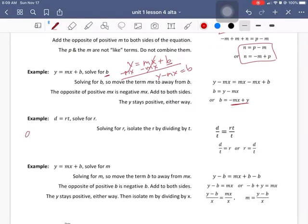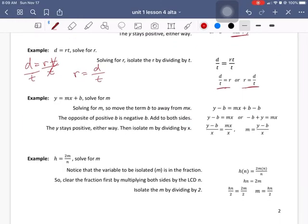All right. D equals r times t. This is distance equals rate times time, and right now it's being solved for the distance. We want to solve it for the rate. So the rate is being multiplied by time. So we want to divide by time to get rid of the t's. Whatever we do to one side, we do to the other side. So rate equals d over t. And it doesn't matter whether you write the r first or second, but the d must be over the t. Okay. And the r must be alone.